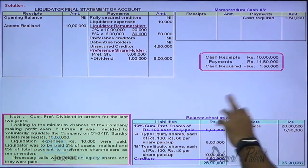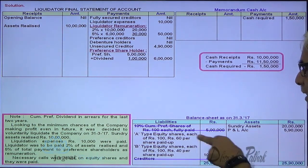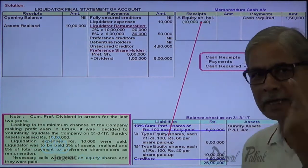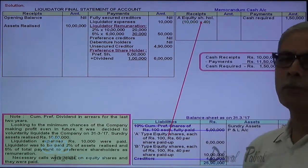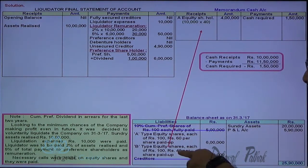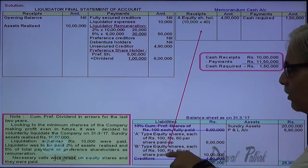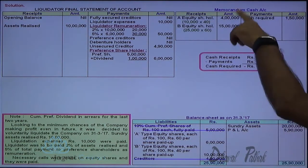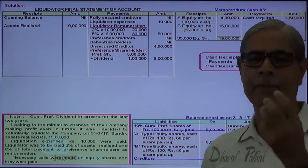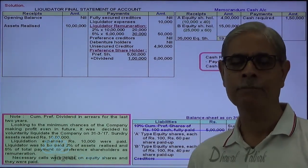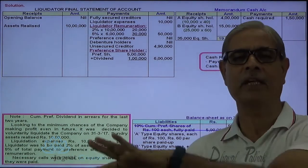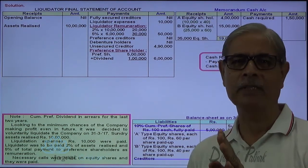On A-type equity shares: 10,000 shares, 60 rupees already paid, so 40 rupees per share is demanded notionally. That gives a hypothetical call of 4 lakhs. On B-type equity shares: 25,000 shares, 40 rupees already paid, so 60 rupees per share is demanded. That gives a hypothetical call of 15 lakhs. Total hypothetical demand is 19 lakhs. From this 19 lakhs, only 1 lakh 50,000 is needed to meet the deficit. Surplus is 19 lakhs − 1 lakh 50,000 = 17 lakhs 50,000. Dividing by total shares (35,000), the refund per share is 50 rupees.